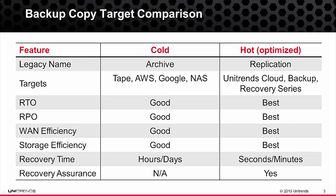Cold targets are essentially secondary storage — for example, tape, third-party clouds, or a NAS device. Hot targets are Unitrends instances, which can be the Unitrends cloud, the backup software, or the recovery series appliance.